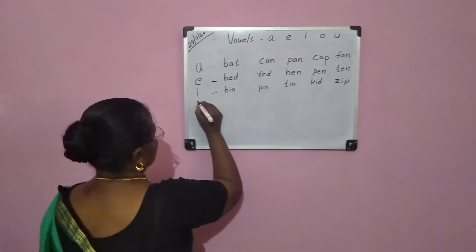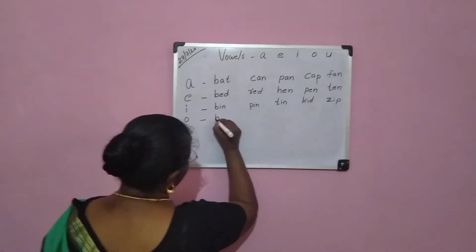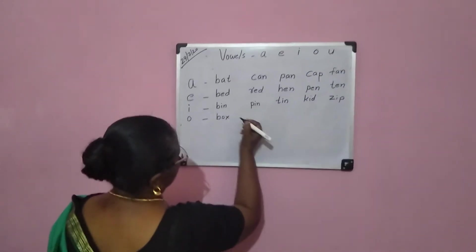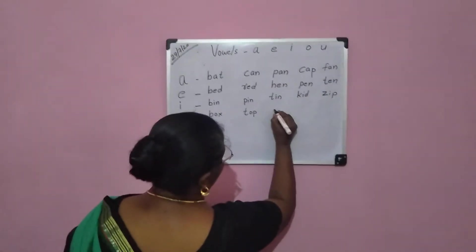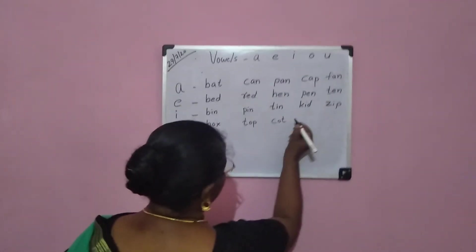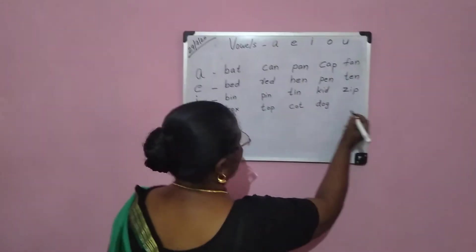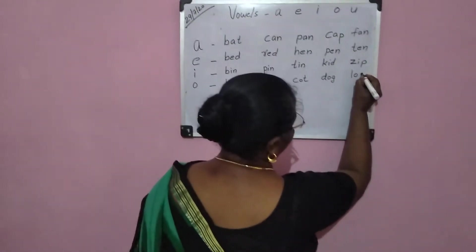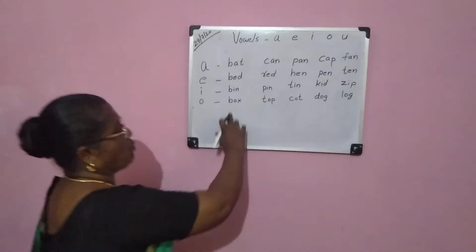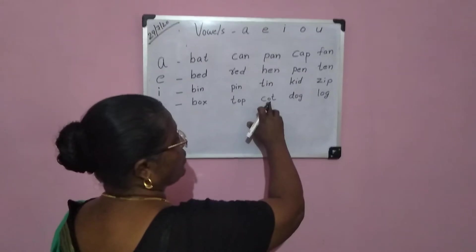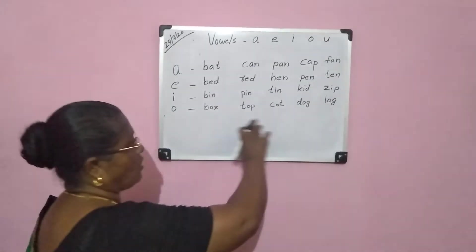O vowel sound. Words with the O vowel sound: box, top, court, dog, law. O vowel sound: box, court, dog, law.